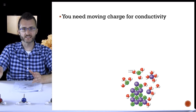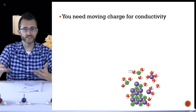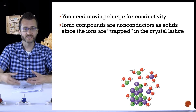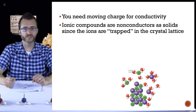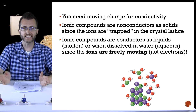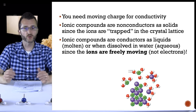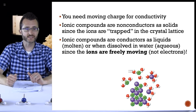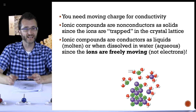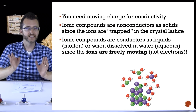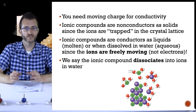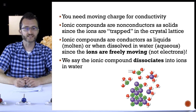You need moving charge for conductivity. Ionic compounds are non-conductors as solids since the ions are trapped in the crystal lattice. However, ionic compounds are conductors as liquids, molten, or when dissolved in water — aqueous. The ionic compounds are freely moving, and it's not the electrons that are freely moving, it's the ions. We say the ionic compound dissociates, or breaks down, into ions in water.